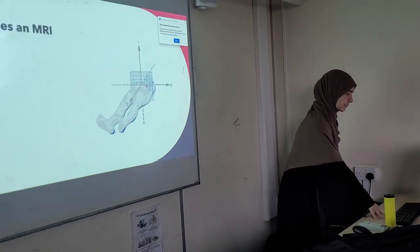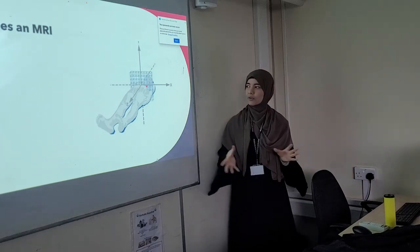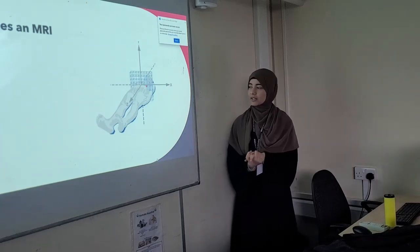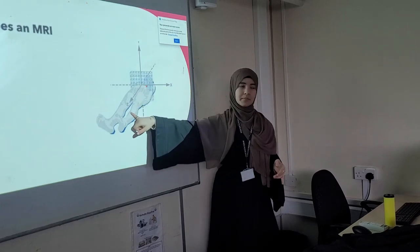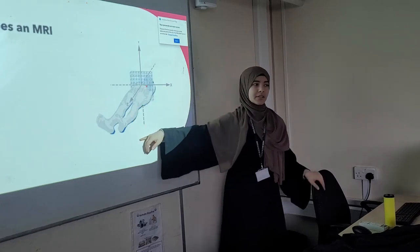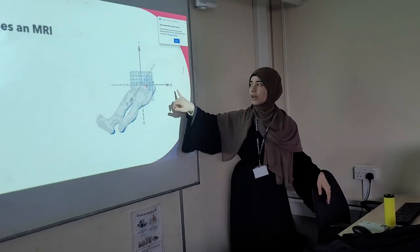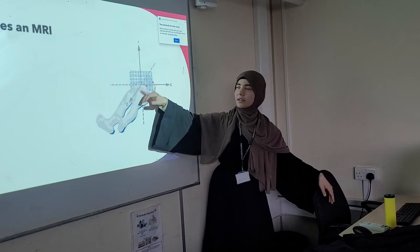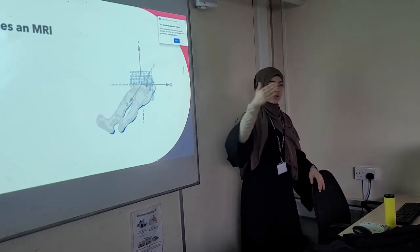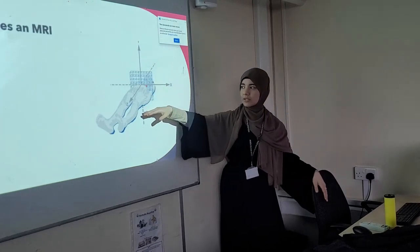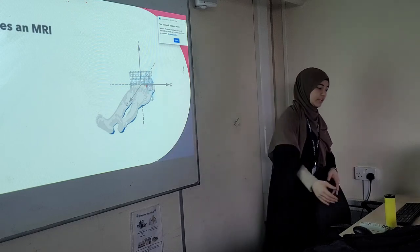Now, how does an MRI work? One concept is something called the Z-axis. The Z-axis is mostly used for 3D imaging. You normally have your X and Y that go up and down — Z goes straight out, and that changes things because the Z-axis is used for the 3D imaging.